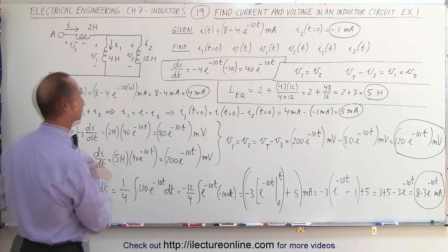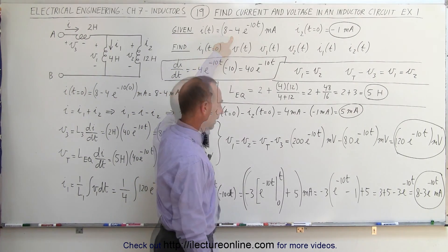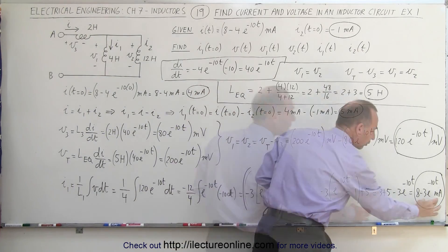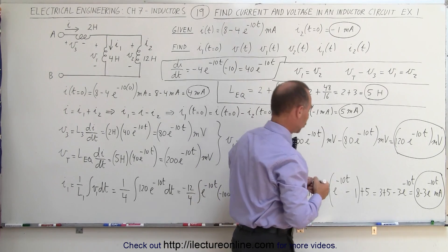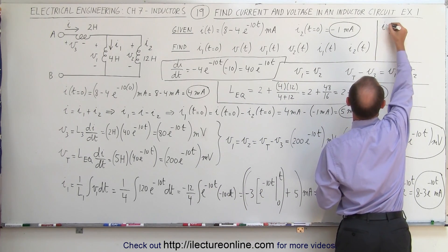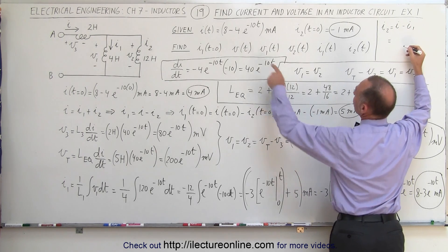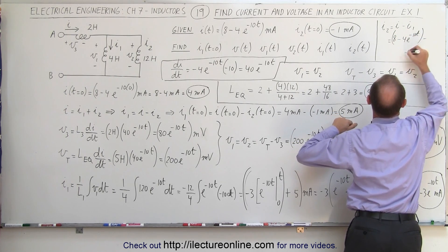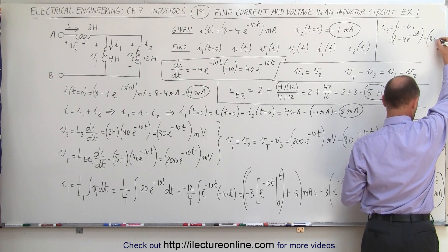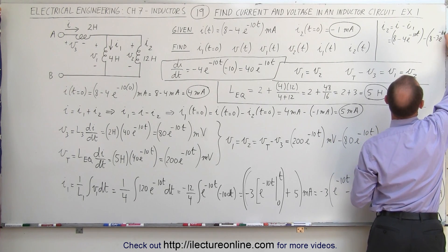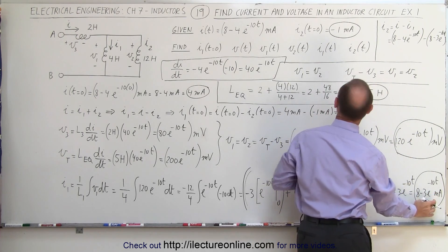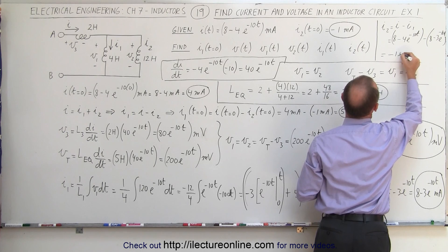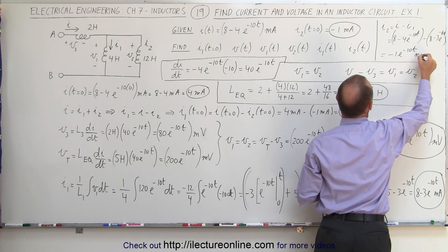To find I2, we subtract I1 from the total current. I2 equals I total minus I1, which is 8 minus 4e to the minus 10t, minus 8 minus 3e to the minus 10t. The 8 minus 8 is 0, and minus 4 minus minus 3 gives minus 1, so I2 equals minus 1e to the minus 10t milliamps.